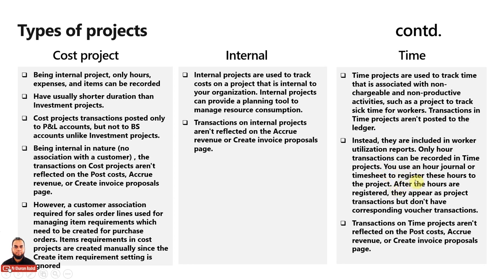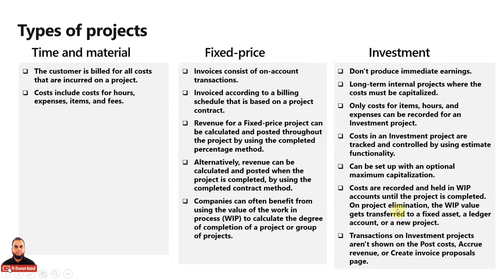You use an hour journal or timesheet to register hours to a time project. After registration, they appear as project transactions but have no corresponding voucher transaction — meaning no ledger impact. Transactions on time projects aren't reflected on post cost, accrue revenue, or create invoice proposal pages. Only time and material and fixed price projects can have post cost, accrue revenue, or invoice proposals for customers.